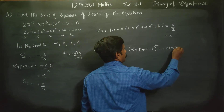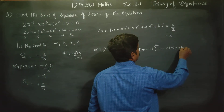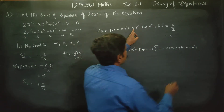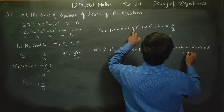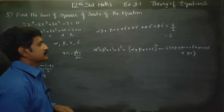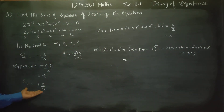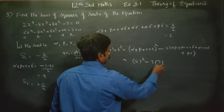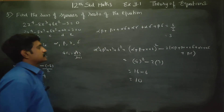The formula expands as: alpha plus beta plus gamma plus delta whole square, minus two times the sum of products taken two at a time. That is S1 squared minus 2 times S2, which gives 4 square minus 2 times 3, equals 16 minus 6, so your answer is 10.